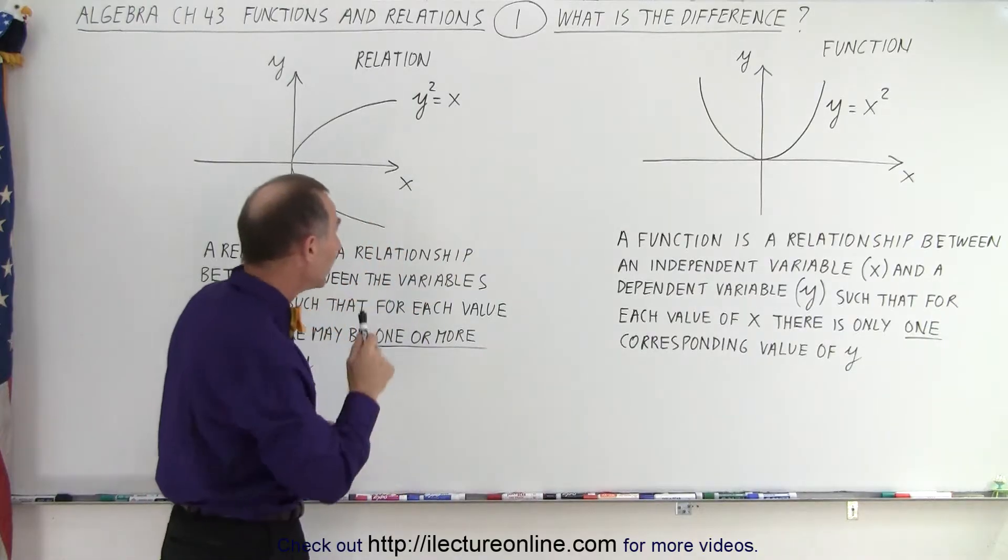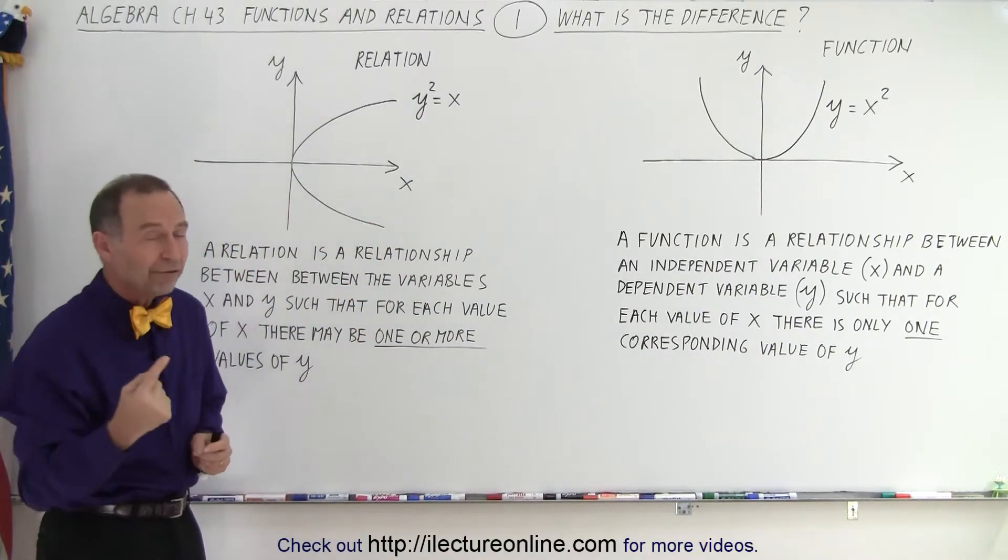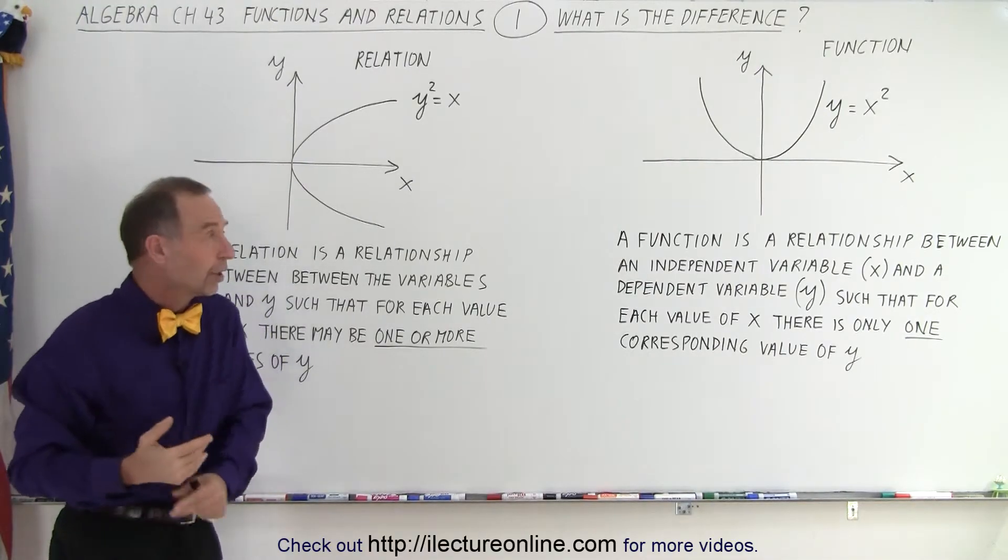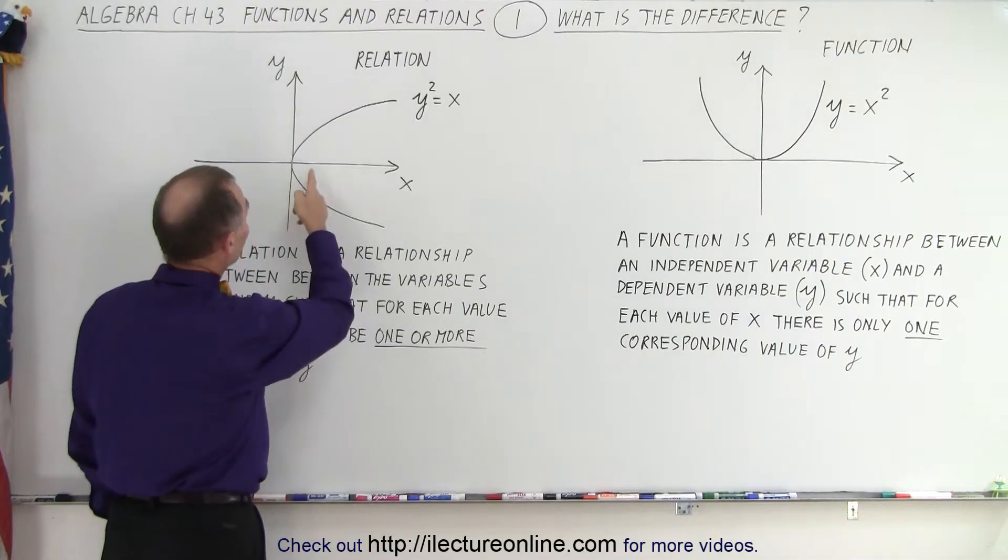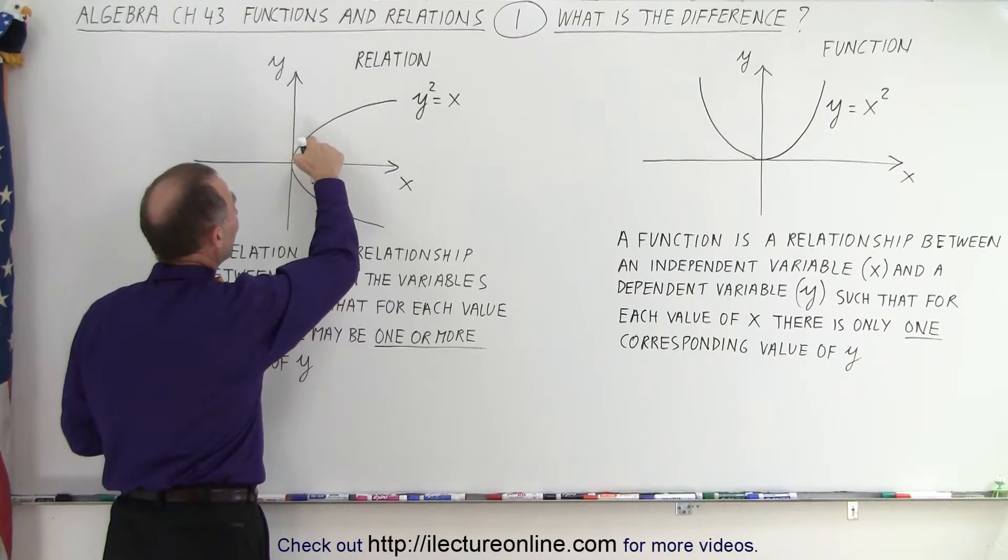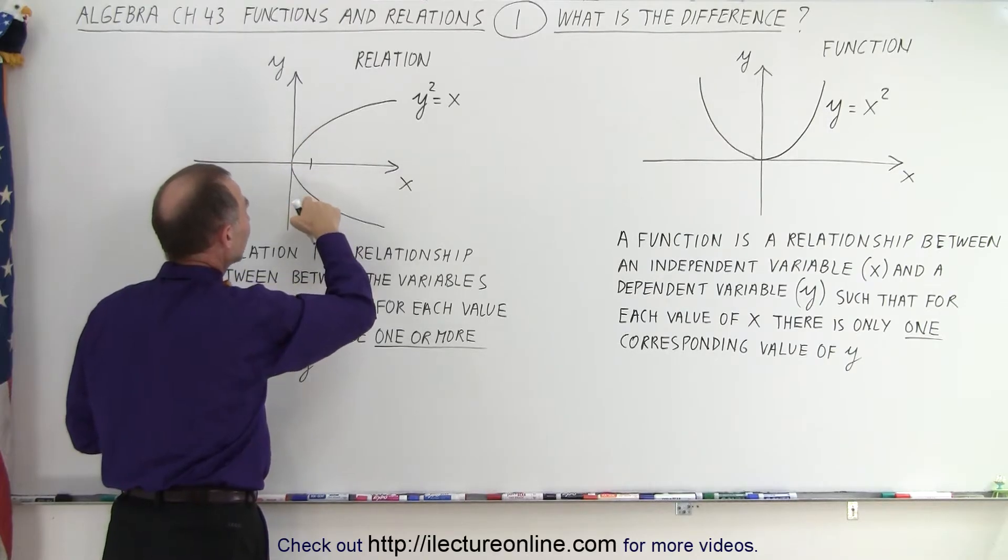As opposed to that, a relation, you could have one value for x that has more than one value of y associated with it. For example, if x is, let's say, one, if this is potentially the point one, notice that y could be a positive number, and y could be a negative number.